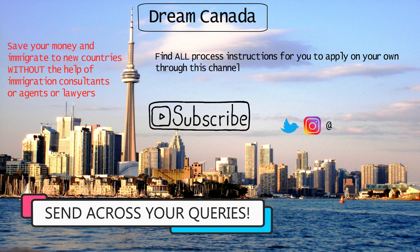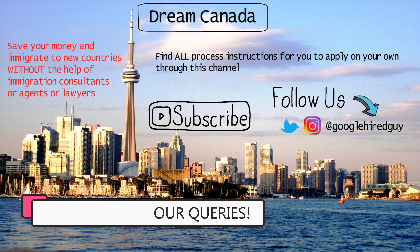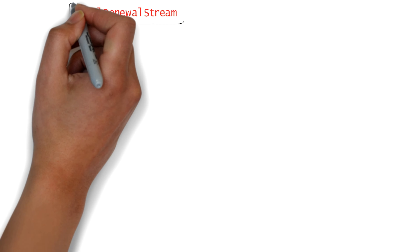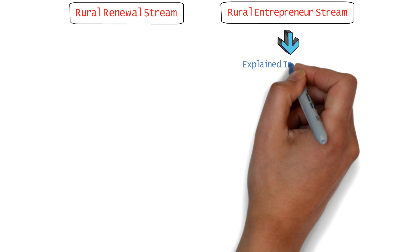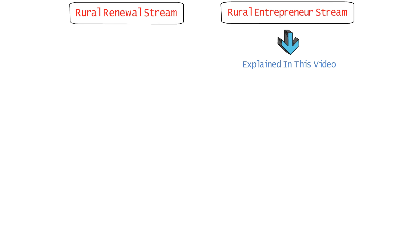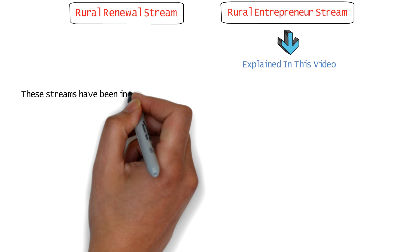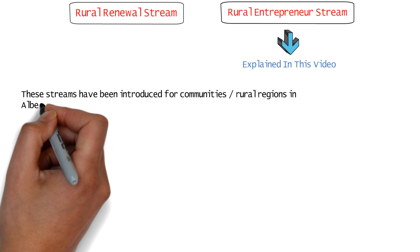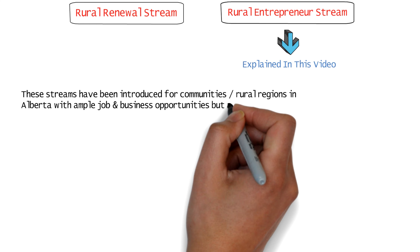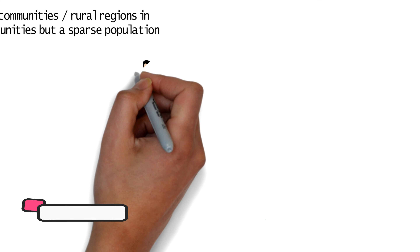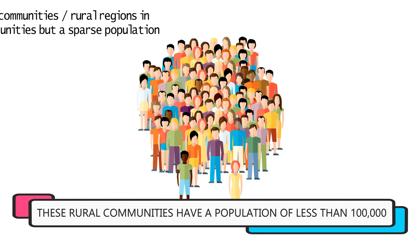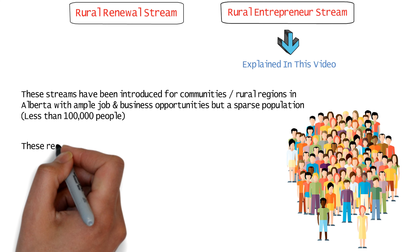On my social handles on Instagram and Twitter, so don't forget to follow us there as well. The first new stream is the Rural Renewal Stream and the second one is the Rural Entrepreneur Stream, which I'll be telling you about today. Both these streams have basically been introduced for communities and rural regions in Alberta that have ample job and business opportunities but a population density of less than 100,000 people.